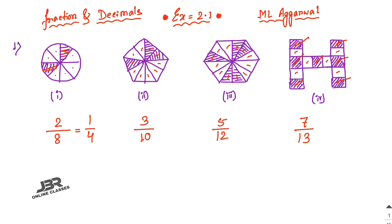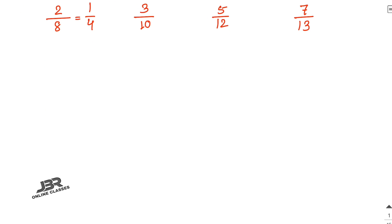For the last figure in problem 1, the answer is 7 by 13. Now moving on to sum number 2: what fraction of an hour is 35 minutes? Write 35 by 60, since 1 hour equals 60 minutes. Cancel out by 5: 35 divided by 5 is 7, and 60 divided by 5 is 12. So 7 by 12 is your answer.